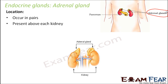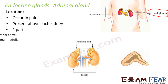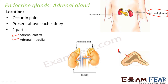This is how the adrenal gland looks from a closer view. The adrenal gland can be divided into two parts. It has two parts: the adrenal cortex and the adrenal medulla. The outer portion is the adrenal cortex and the inner portion is the adrenal medulla.